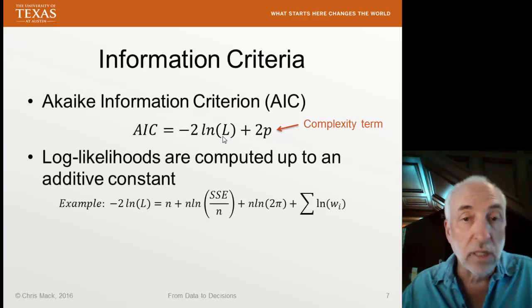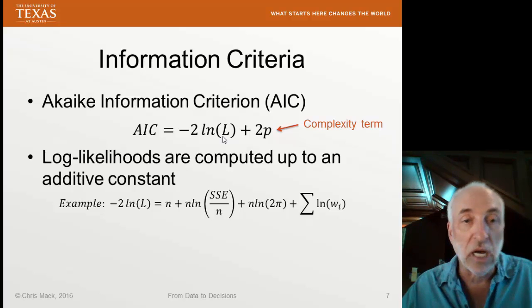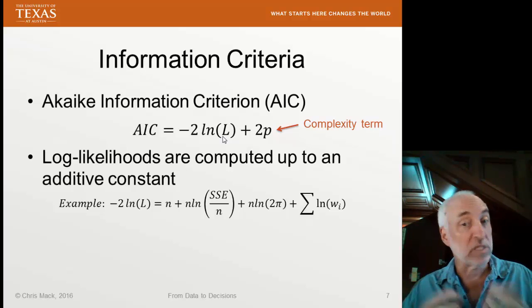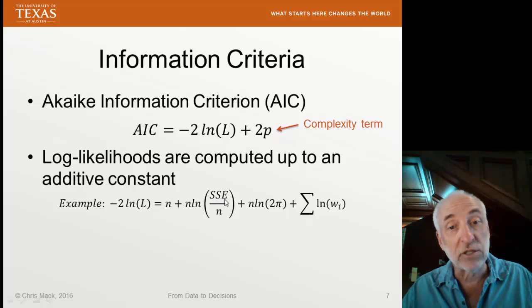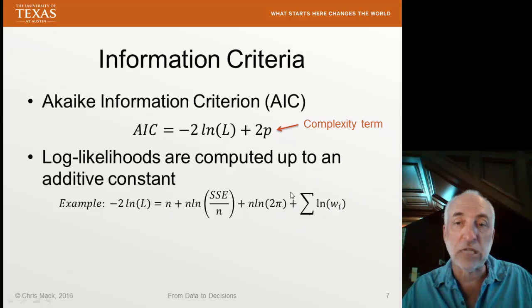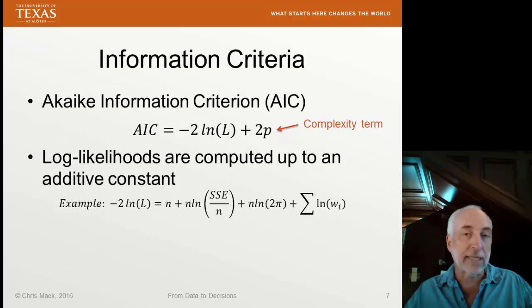Now, log likelihoods are computed in regressions up to an additive constant. So here is an example of a log likelihood that you might get back from a specific regression piece of software. You can see where it came from from the previous expression. The sum of square errors divided by n, that's our estimate for the variance of the residuals. We also have this n log two pi n term. I have a weighted regression, then I include this. If I don't have a weighted regression, all the weights are one. Log of one is always zero, so this goes away.